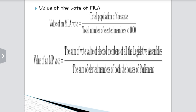The value of an MLA vote equals the total population of the state divided by the total number of elected members, multiplied by 1000. The value of an MP vote equals the sum of vote values of elected members of all Legislative Assemblies divided by the sum of elected members of both Houses of Parliament.